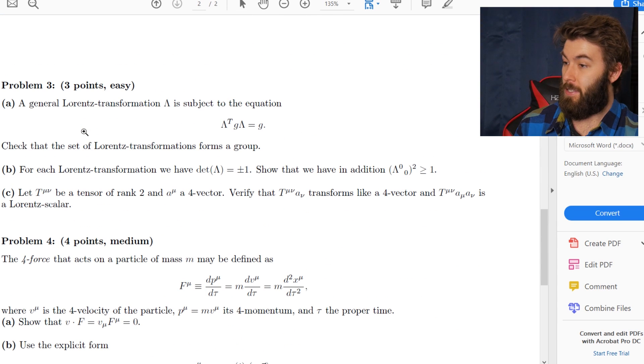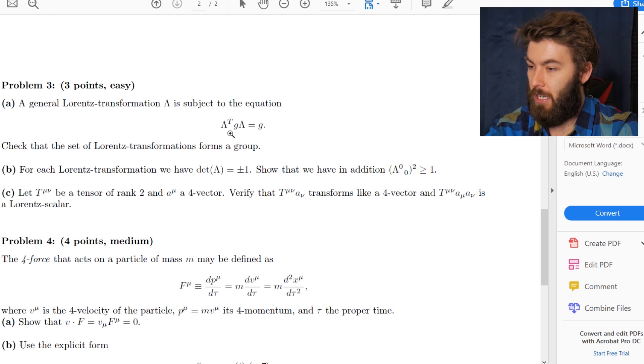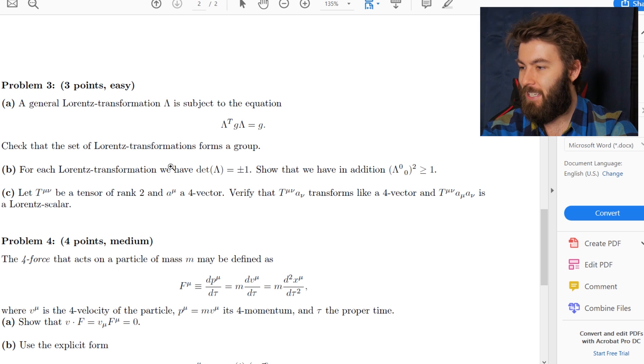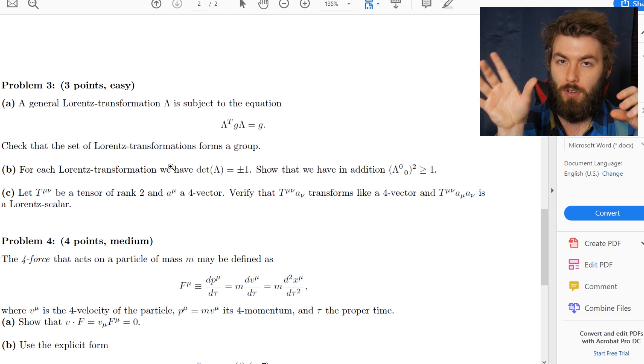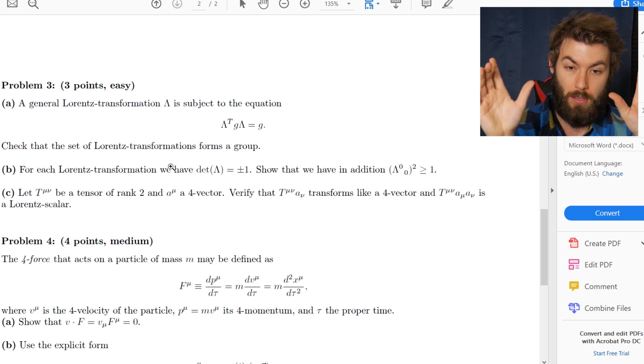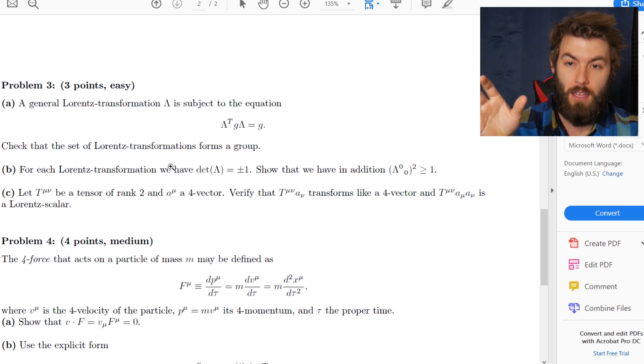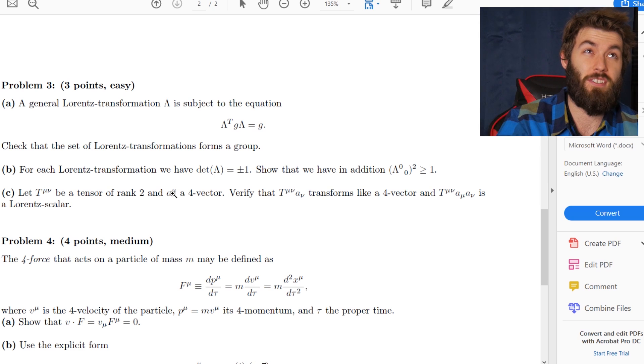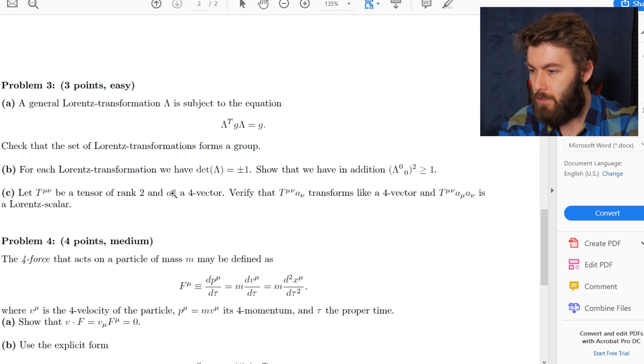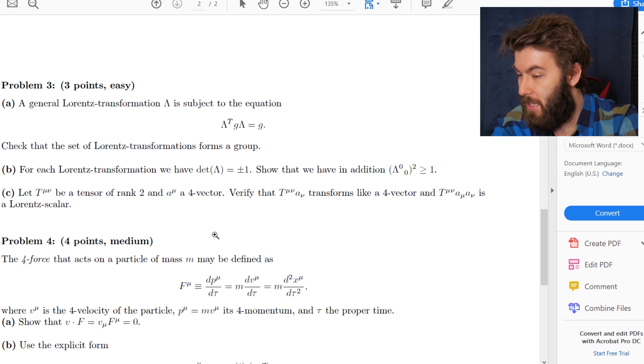Problem three, three points easy. A general Lorentz transformation lambda is subject to the equation lambda transpose times g times lambda is equal to g. Check that the set of Lorentz transformations forms a group. Cool, so it's getting into the Lorentz group. Or if you impose conditions on the determinant becoming SO3. So it's getting into, it seems like a really basic group theory.